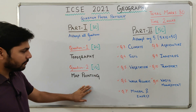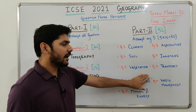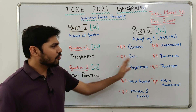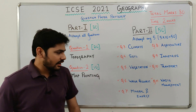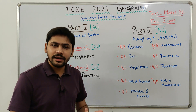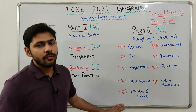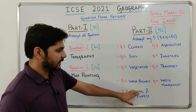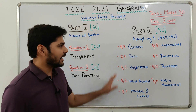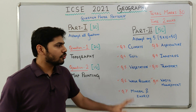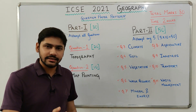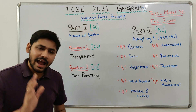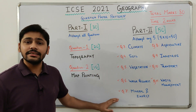Moving on to Part 2 tips: just like topography, write precise and to-the-point answers — do not exaggerate anything in geography. If you know an extra question properly, you can attempt it. With precise answers you can easily score 50 out of 50 in Part 2. The geography paper is very easy and you can easily score 80 out of 80.